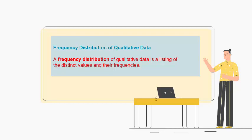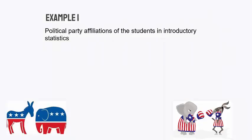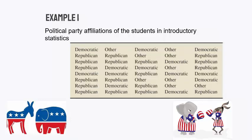A frequency distribution of qualitative data is the listing of the distinct values and their frequencies, and/or the relative frequencies as well. To illustrate this, suppose I asked all my students in an introductory statistics class what their political party affiliation is, and these are the results.